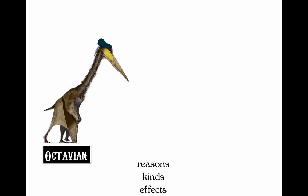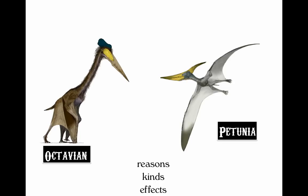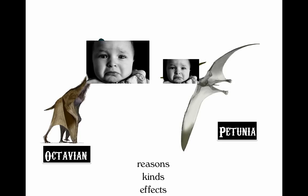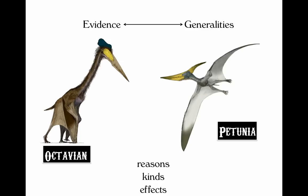In both of these situations, we have someone who is trying to convince someone of something, whether in real life or in a college classroom, but it isn't working. Both Octavian and Petunia aren't giving any evidence for their general claims. This makes them very sad because they are not getting the effects they want from their audience. Evidence and generalizations are opposites, but generalizations can be death when it comes to effective communication, because your audience desires evidence.